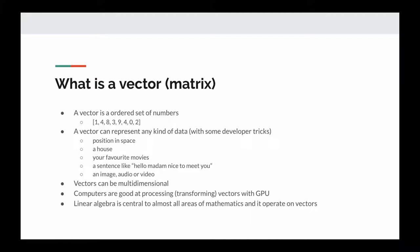You can vectorize your favorite movies the same way — maybe the genre, the actors, your ratings, etc. You can vectorize a sentence into vectors through one-hot encoding or sentence embeddings, which we will look into later. You can convert an image, audio, or video into vectors — they are represented as vectors in the computer anyway. The idea is you can represent almost any kind of data as vectors in computers.